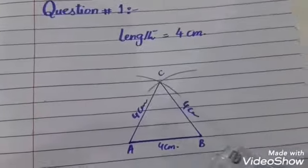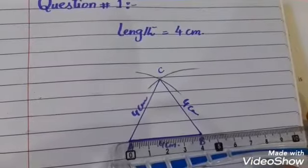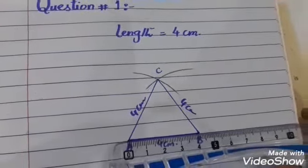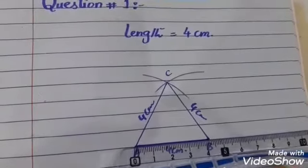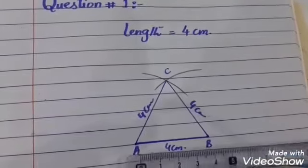First, we have to draw a 4 centimeter line segment, because without a line segment we cannot construct a triangle or angles. So first, we draw a line segment AB which is 4 centimeters.